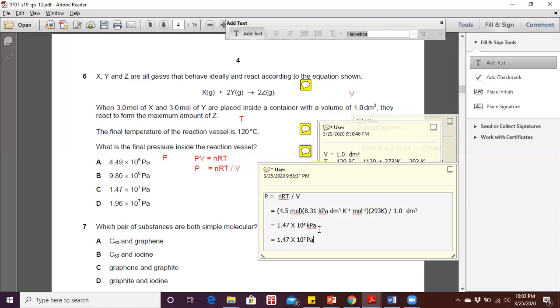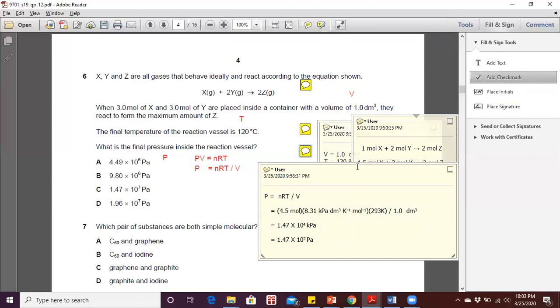Now, change this kilopascal into pascal, where we have two times with 1,000. In the end, we would have 1.47 times 10 to the power of 7 pascal, which is, the answer is C.